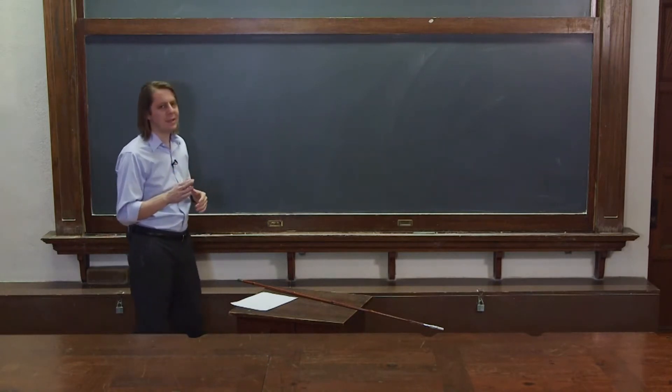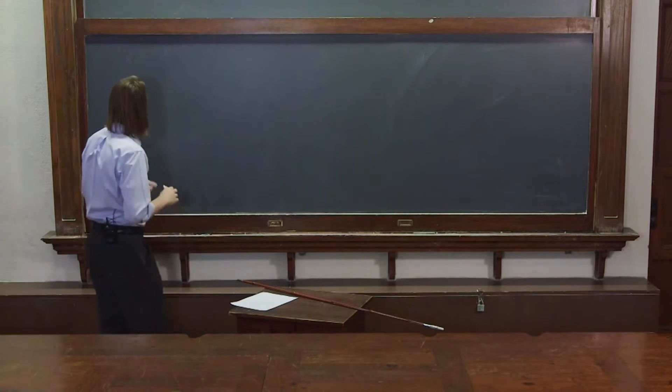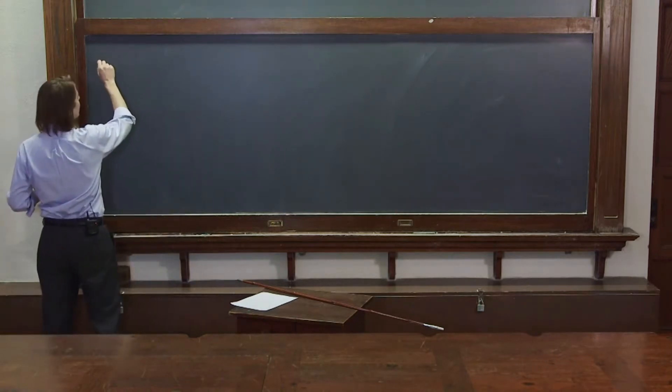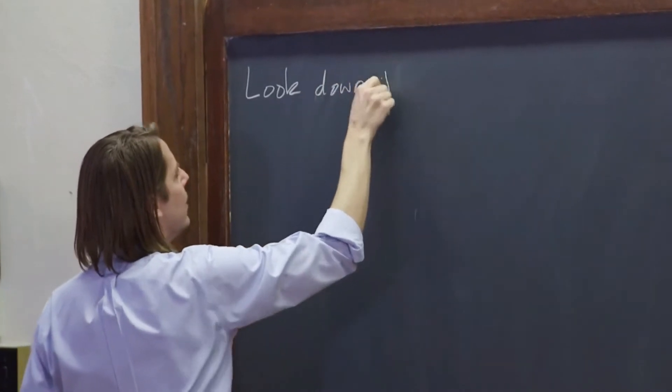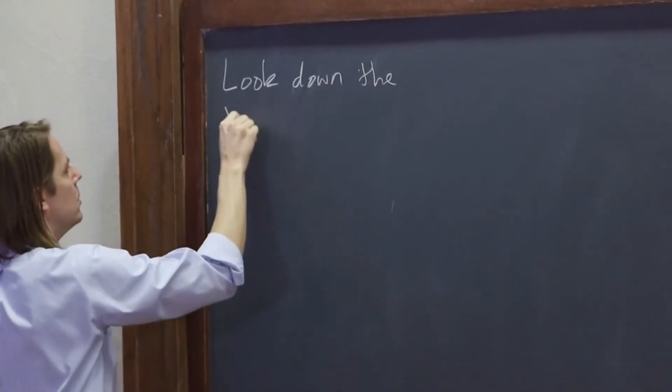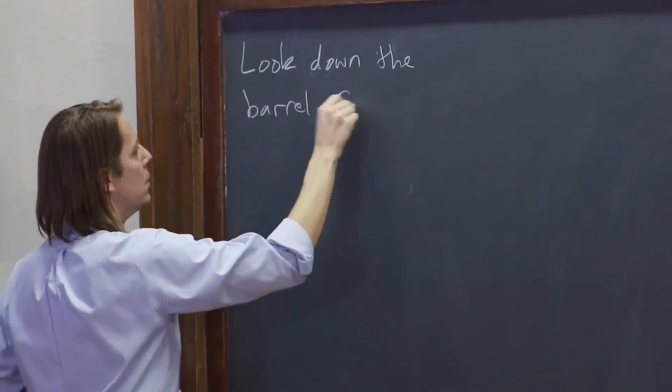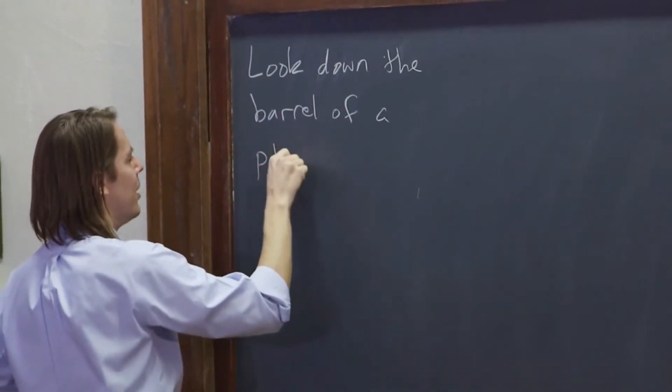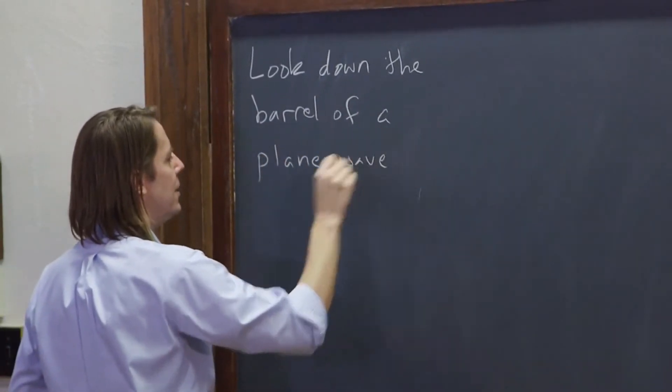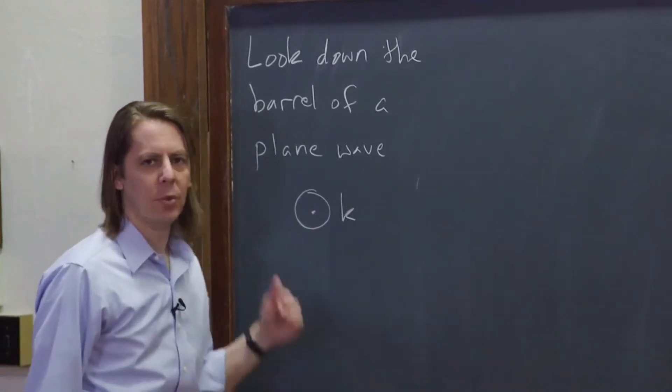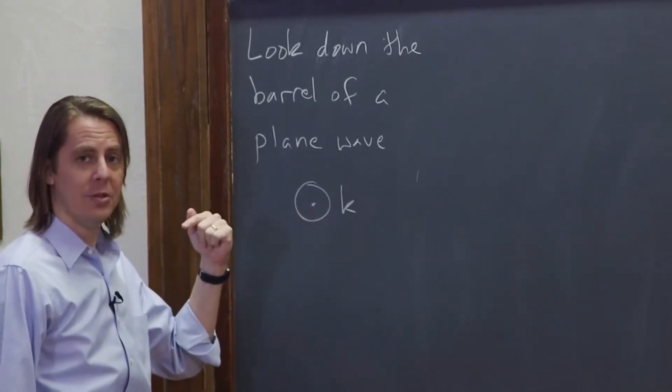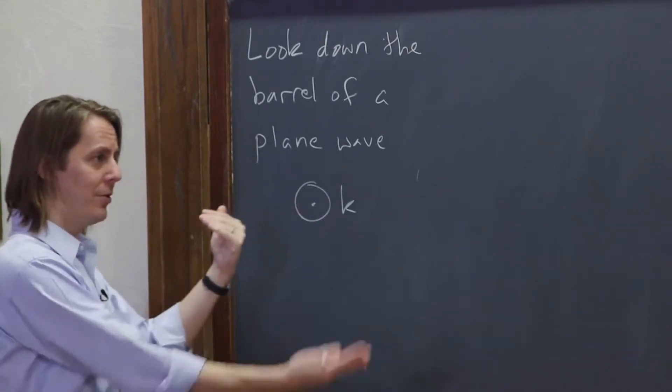So to start, we need a formalism, a mathematical way to describe polarization. Let's look down the barrel of a plane wave. And by that, I mean we're going to look at a plane wave like this, with a k vector coming out. Usually you might think we'll follow the plane wave. No, now it's coming at us.